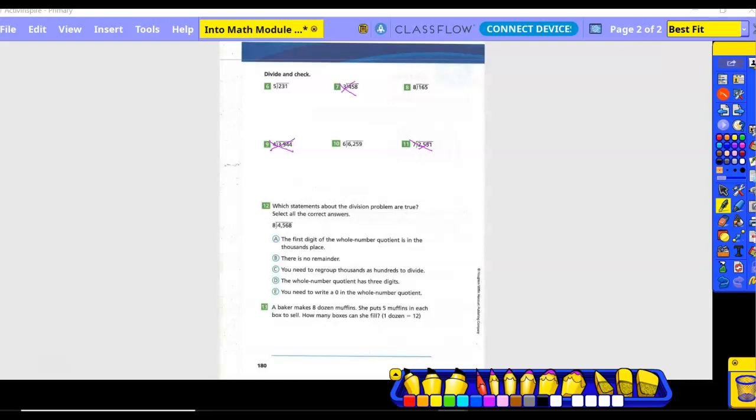Okay. So can five go into two? Nope. So I put a zero. Can five go into 23? Yes. Four times, right? So I put a four up above the three. Four times five is 20. So 23 minus 20 is three. Bring down my one. Five can go into 31 six times. Six times five is 30. 31 minus 30 is remainder one. Okay. Do I have anything else to bring down? No. So that becomes my remainder.